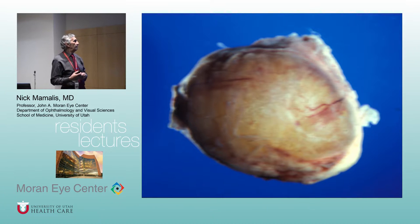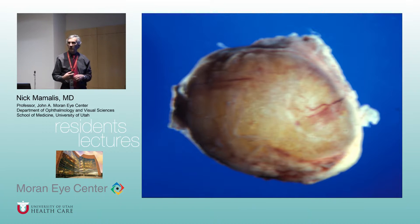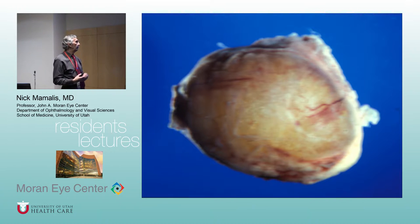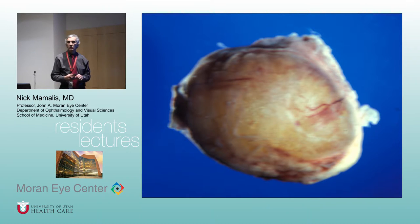This is a specimen removed from the orbit — we're shining a light through it to show it's cystic. A big cystic orbital lesion in a five-year-old would be concerning for a dermoid cyst.